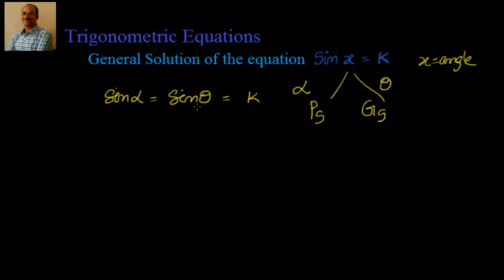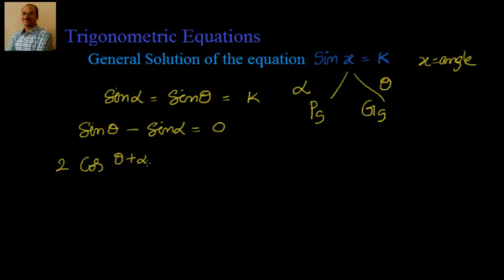Since sin α = sin θ, we can write sin θ − sin α = 0. Using the sum-to-product transformation, sin C − sin D = 2 cos((C+D)/2) · sin((C−D)/2), this becomes 2 cos((θ+α)/2) · sin((θ−α)/2) = 0.